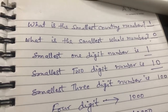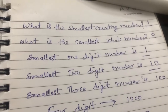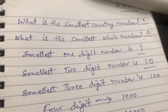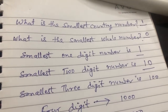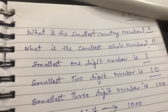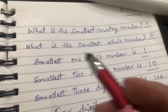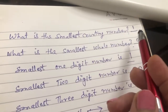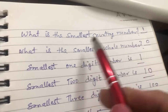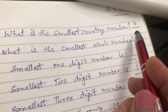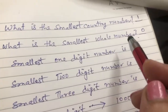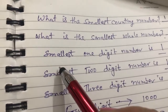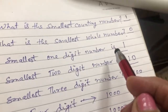Hello friends, today we will learn about the smallest counting number and the smallest whole number in the number system, and what is the smallest one digit number. The smallest counting number is one, the smallest whole number is zero — you should remember it — and the smallest one digit number is one.